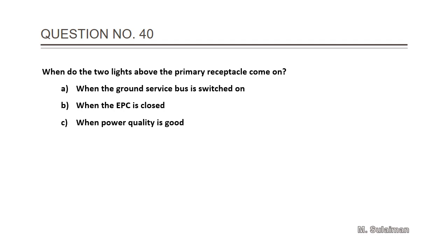Number 40: When do the two lights above the primary receptacle come on? Answer is C: when power quality is good.